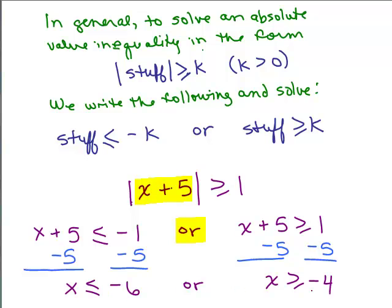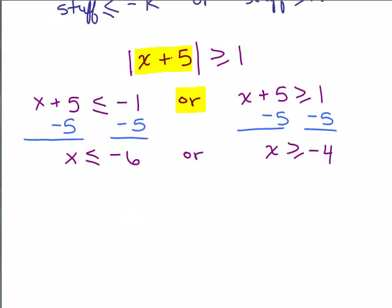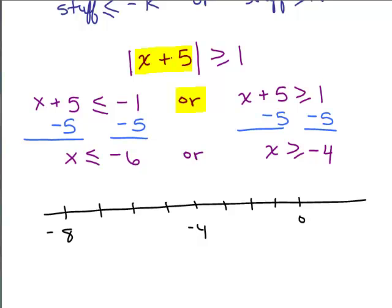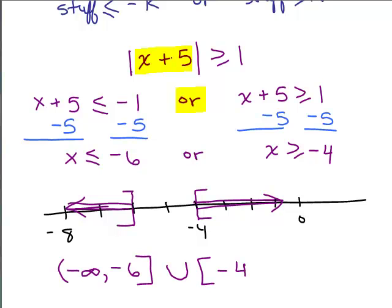So this is our solution. x is either less than or equal to negative 6 or x is greater than or equal to negative 4. How does that look on a number line? Here's 0, here's negative 8, here's negative 4. So I want numbers less than or equal to negative 6, going to the left of negative 6. And remember to use the bracket because it's actually equal to negative 6. Or it could also be the numbers over here, greater than or equal to negative 4. How would I write that answer using interval notation? I would be going from negative infinity to negative 6, union negative 4 to infinity. So this is our answer to this problem.